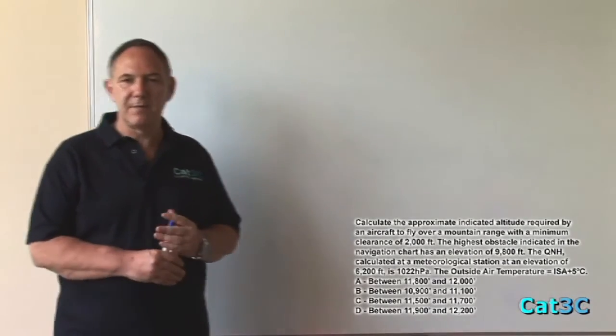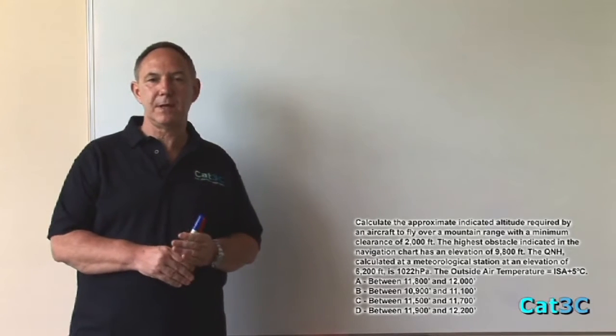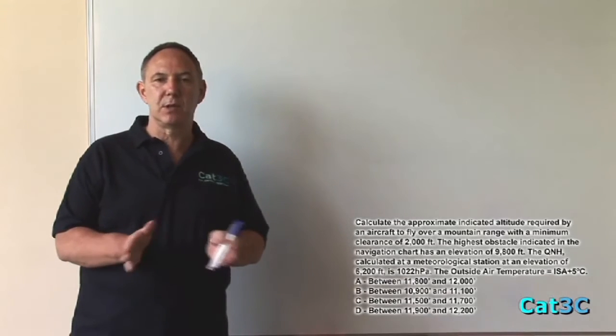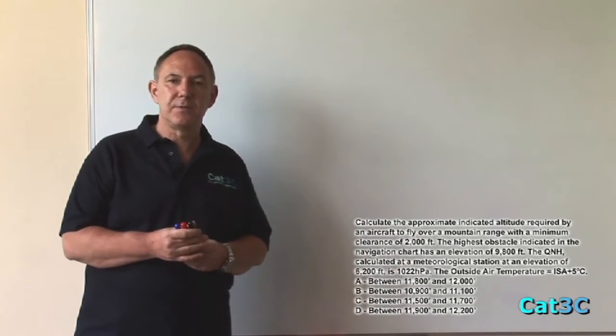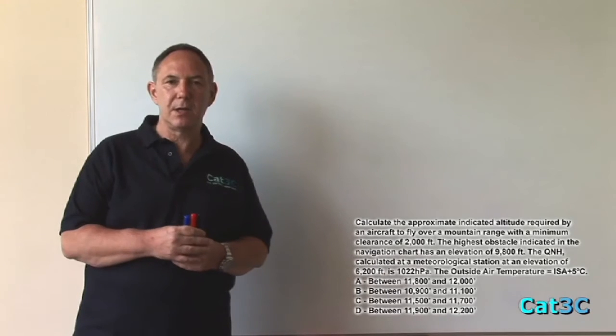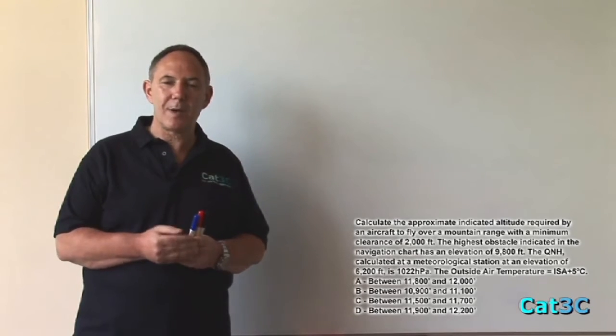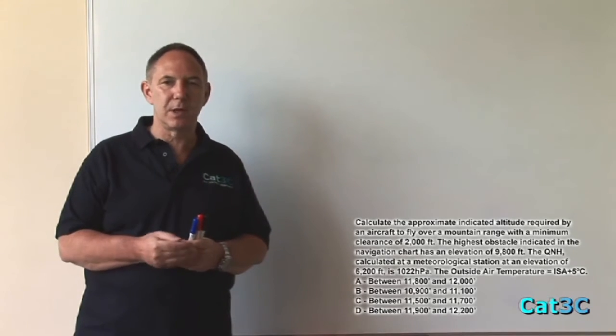Note to this question, you're actually given bracketed answers so you can find what the object of the question is to find an answer that falls within the two extremes within each answer. So the first thing we need to do is to realize that what we're actually looking for is an indicated altitude, not a true altitude.